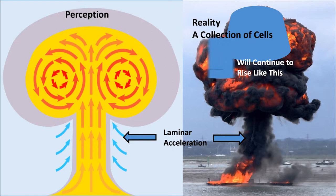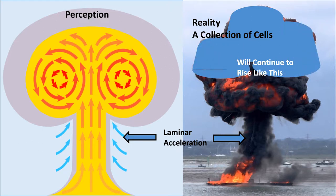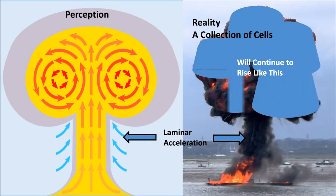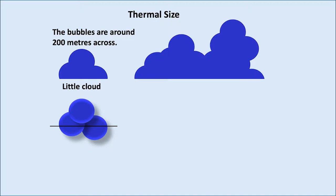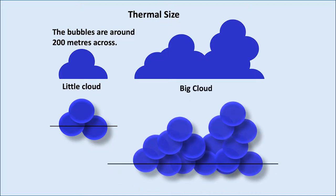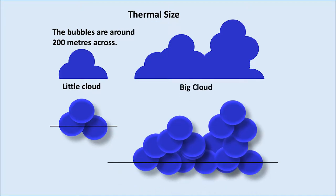So there's one cell, there's another cell, a third, a fourth at the back there, and there's the fifth. Thermal size then — the bubble is around 200 metres across. Here's a little cloud, and what it's actually made up of is three vortices in this example. If we look at a bigger cloud, it's made up of numerous vortices.